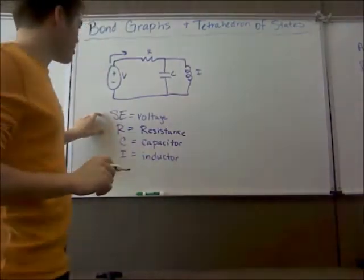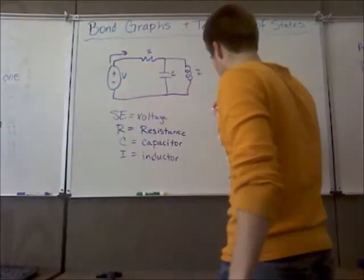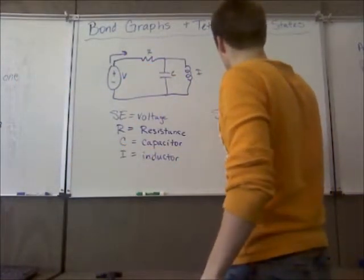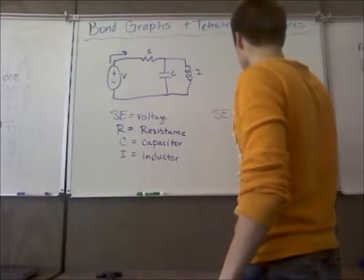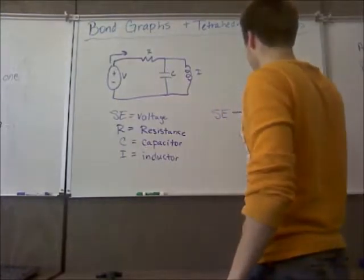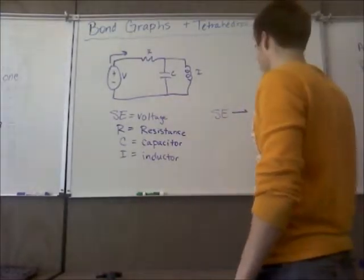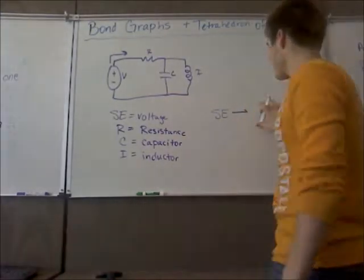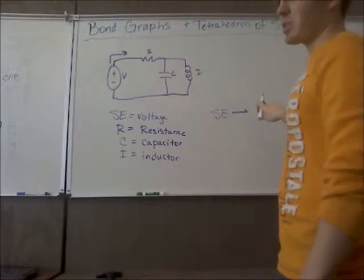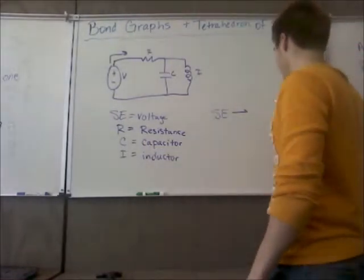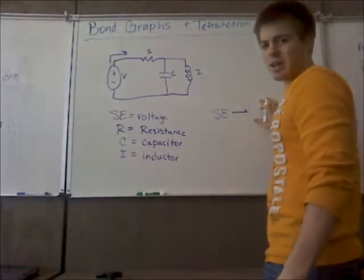Okay, so I'm going to start by drawing the source SE by effort. Now I'm going to draw a line with an arrow pointing in the right direction because that's the way I'm showing that the system is flowing. And that's going to go into a junction.